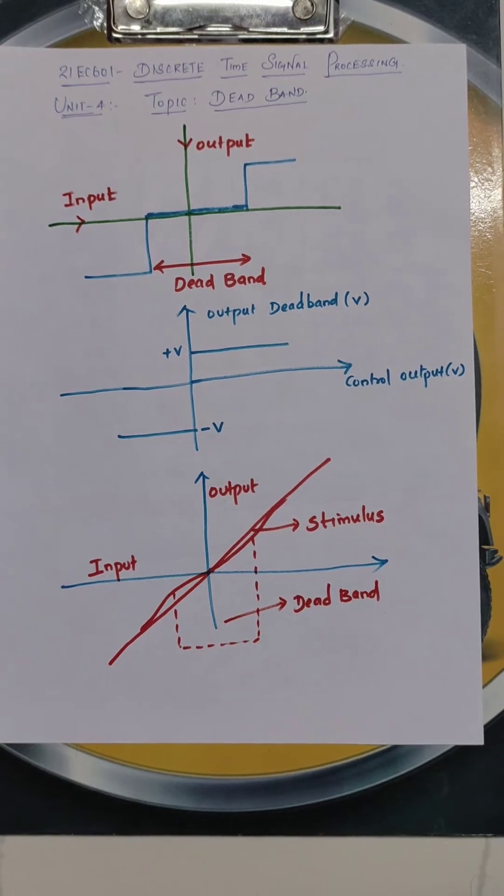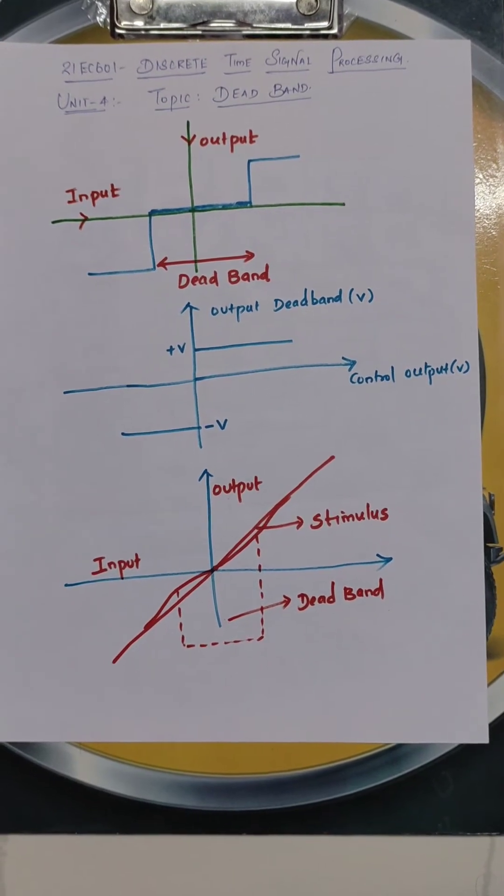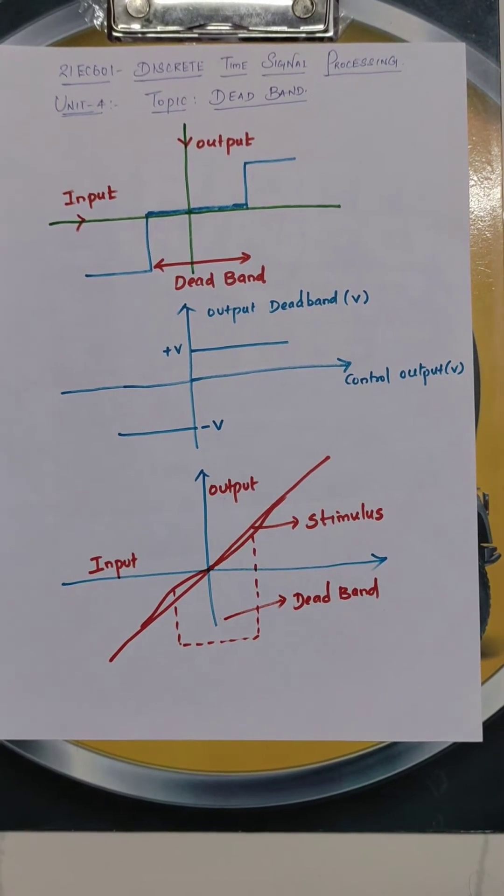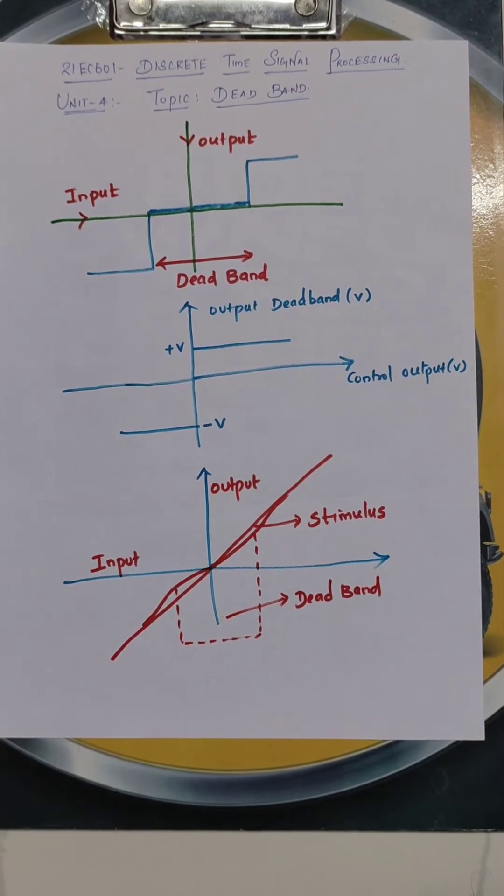The output will be limited. It will be continuously changing with the input to the output. When we have the limit cycle oscillation, we have the concept called deadband filters.